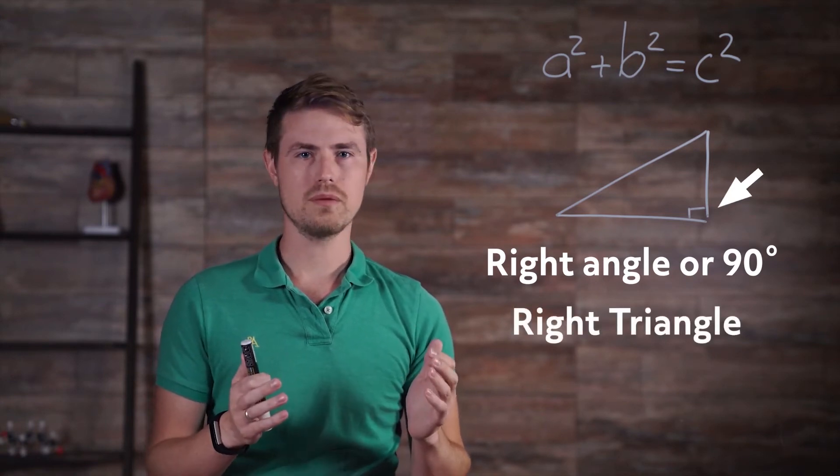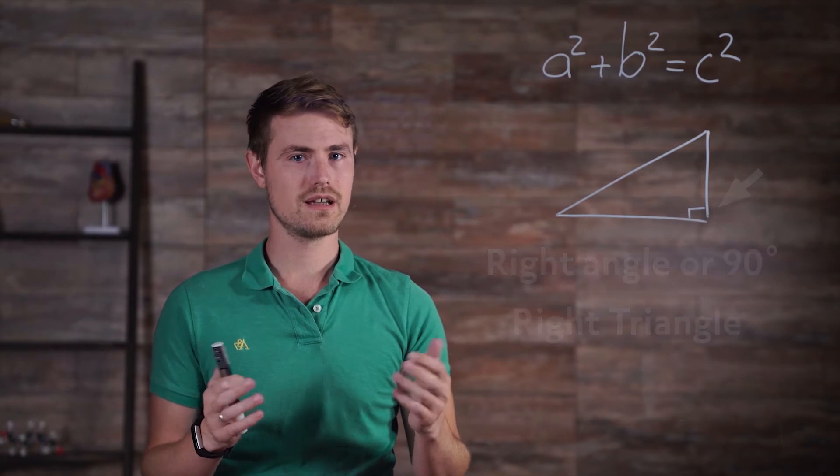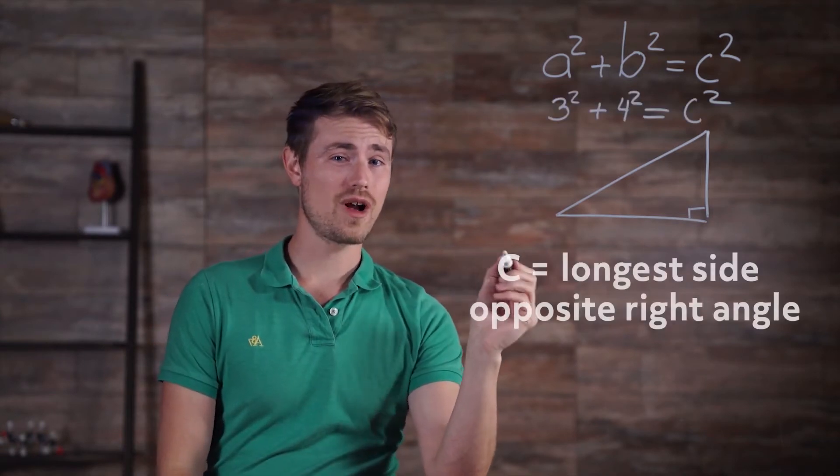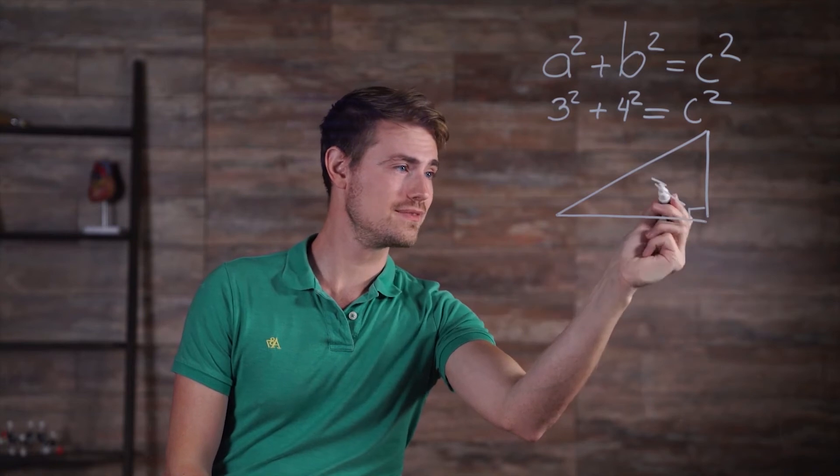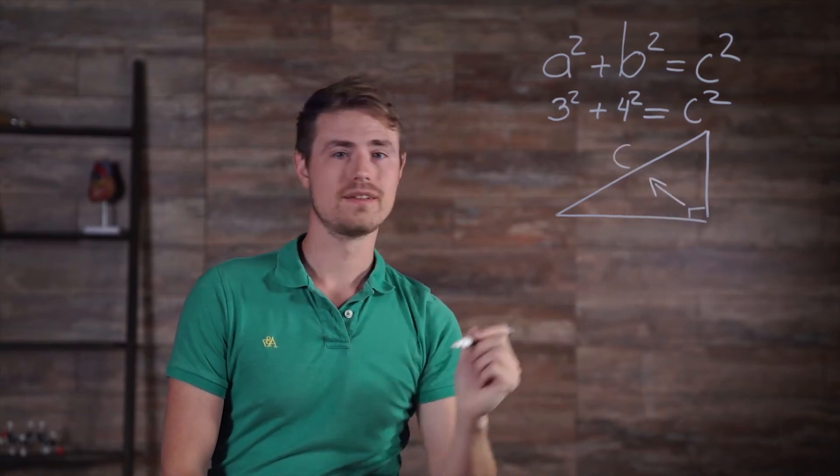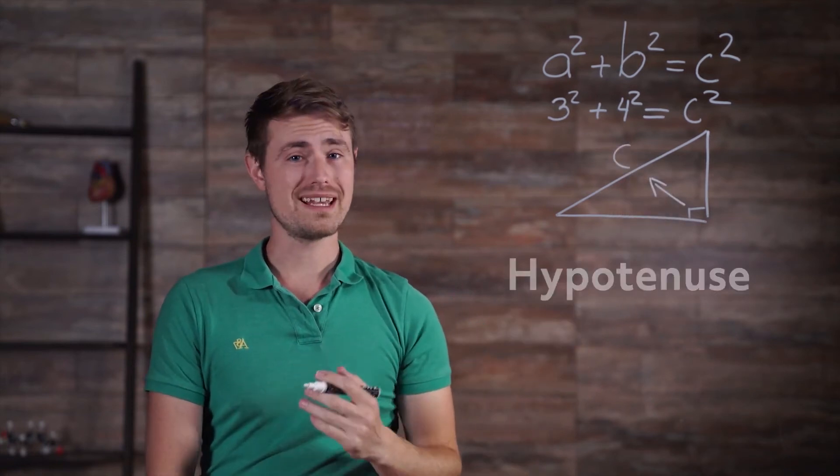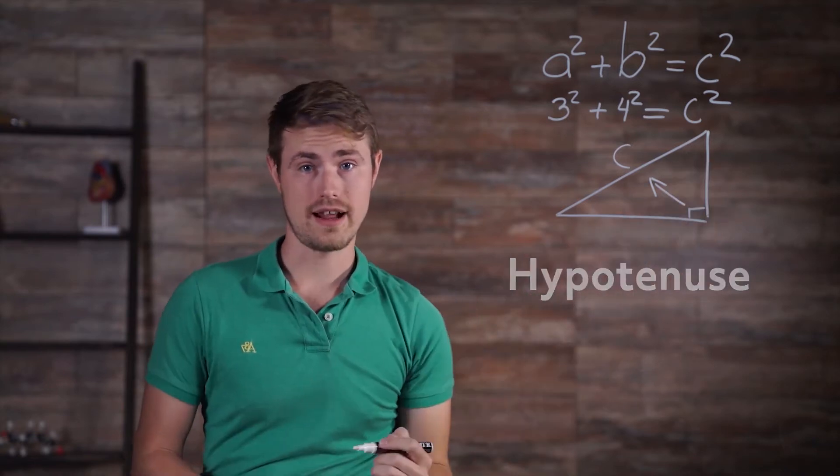So, now we have to decide where to put the three side lengths. The key is to start with c, which is always on the side across from the right angle. This is called the hypotenuse, and it's always the longest side.